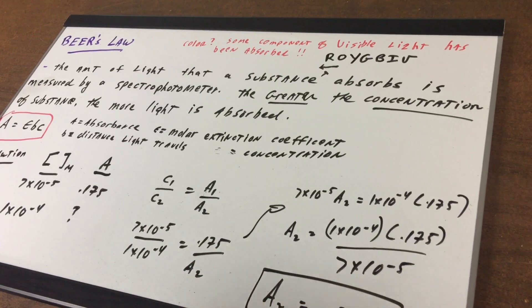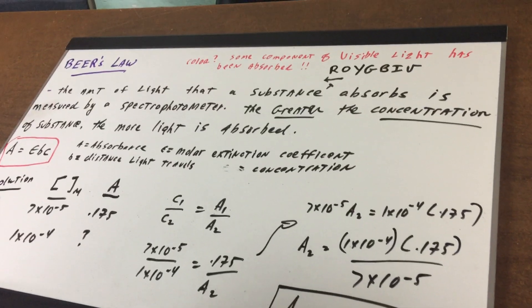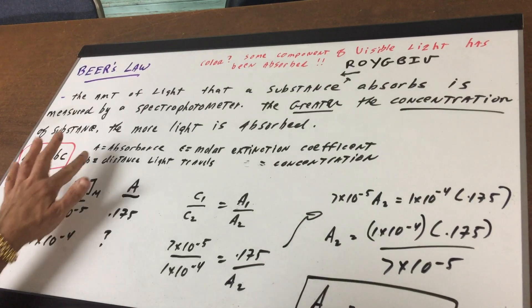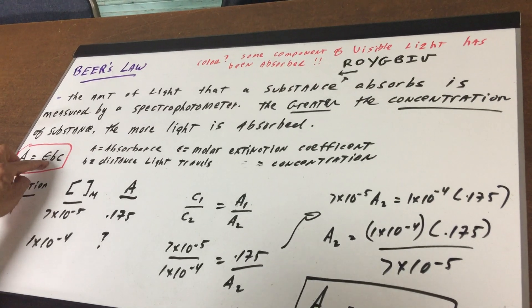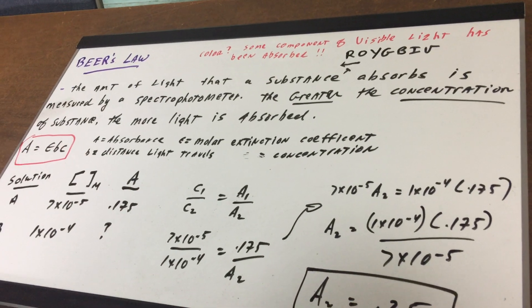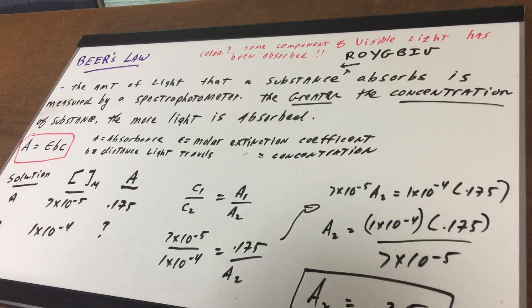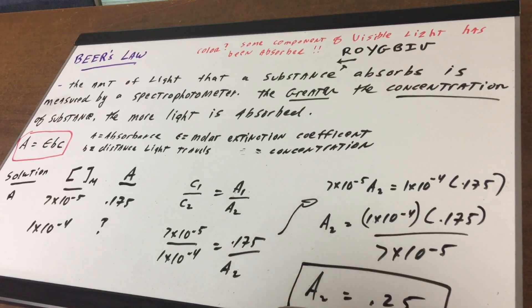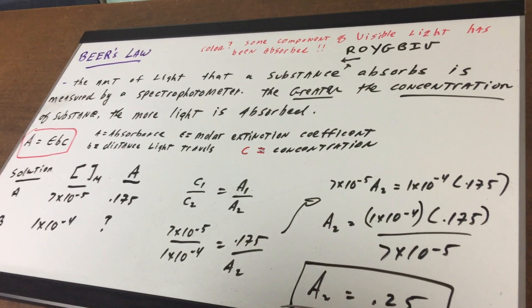Now what we're gonna do is look at a law called the Beer-Lambert Law, and that says that A equals EBC. Now A stands for absorbance. The little E stands for the constant. We call this the molar extinction coefficient. B represents the distance that the light travels, and C is going to stand for the concentration.